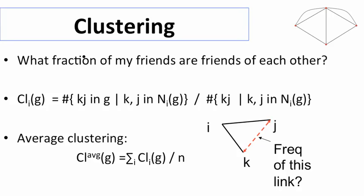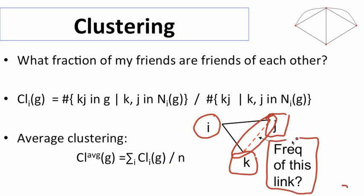And so clustering looks at if we have a given node i and we look at two of i's friends, j and k, what's the chance that those two are related to each other? So what's the frequency of links among the friends of i?